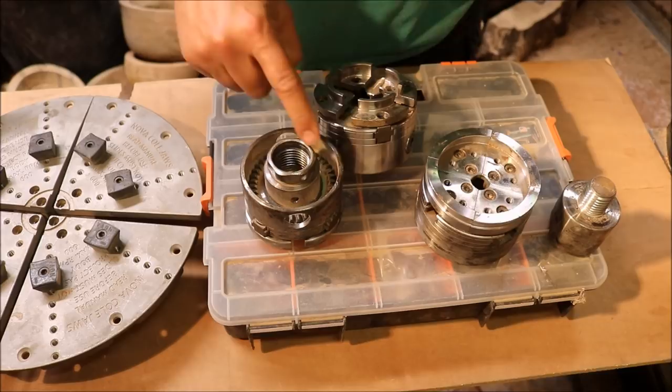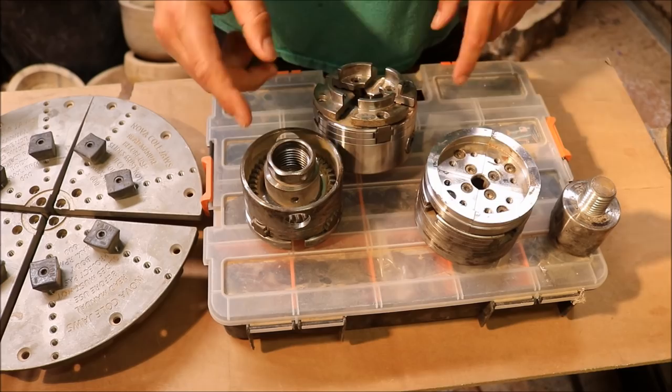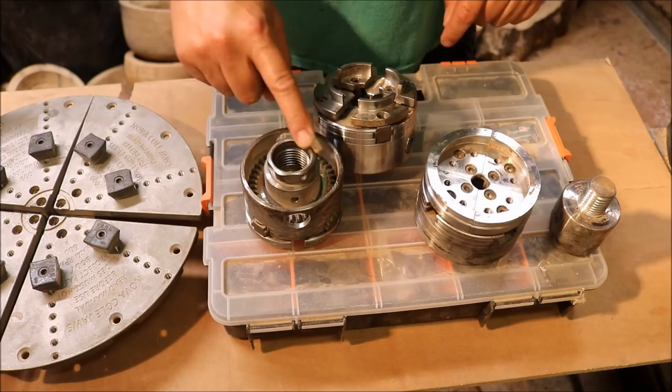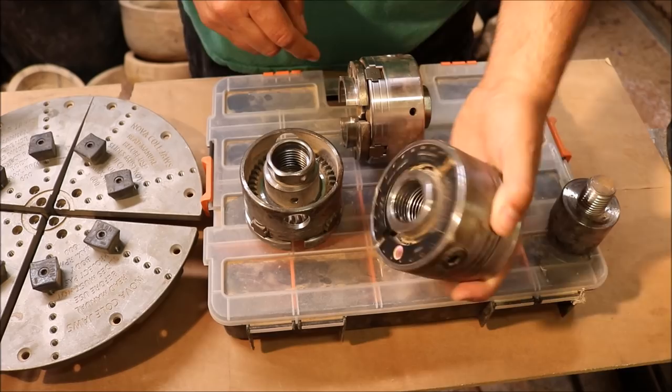Before we go on, I want to talk about this little insert right here. When you're buying a chuck, make sure it either fits your spindle TPI or make sure you get the proper insert. This one requires an insert. It does not fit. But I have this Nova Supernova 2 right here that does fit my lathe. It's the right size. I don't need to get an insert.